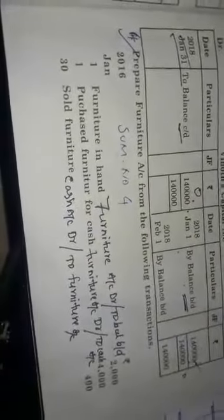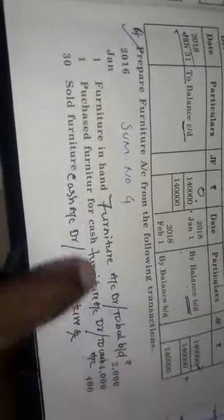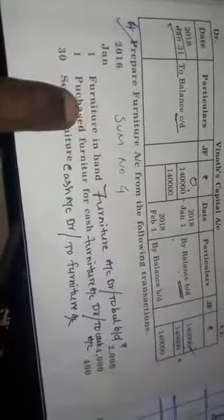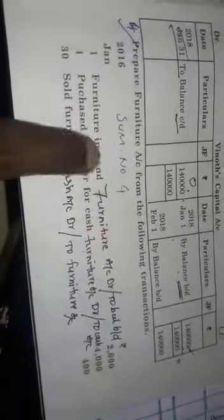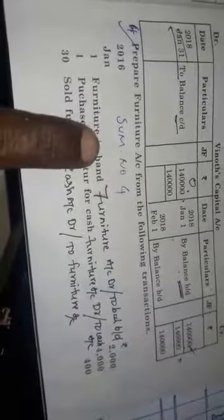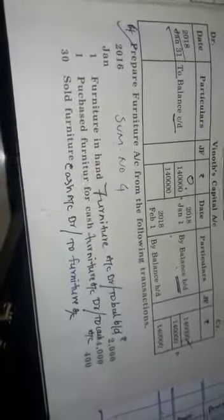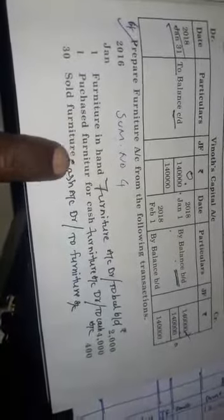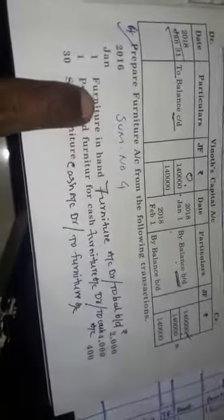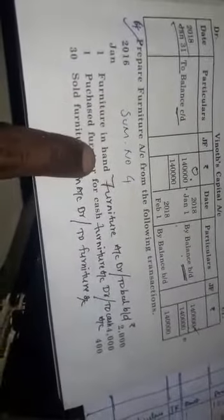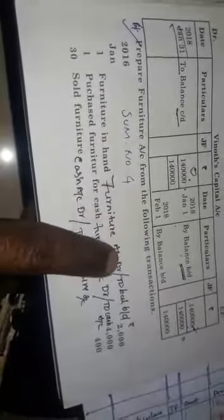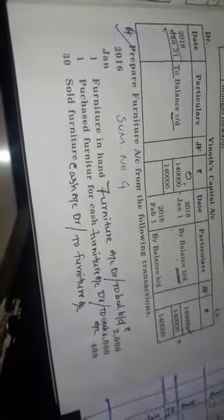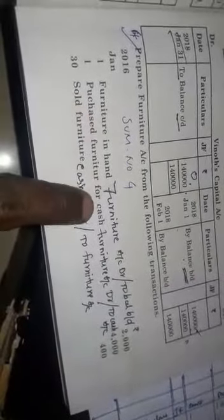Dear children, we are going to see sum number four. I will teach you the journal entries for the following transaction. You post the ledger by yourself — I will give you this sum as homework. First, furniture in hand — furniture account is debtor. In the journal entries, you prepare the ledger by yourself. Purchase the furniture for cash.